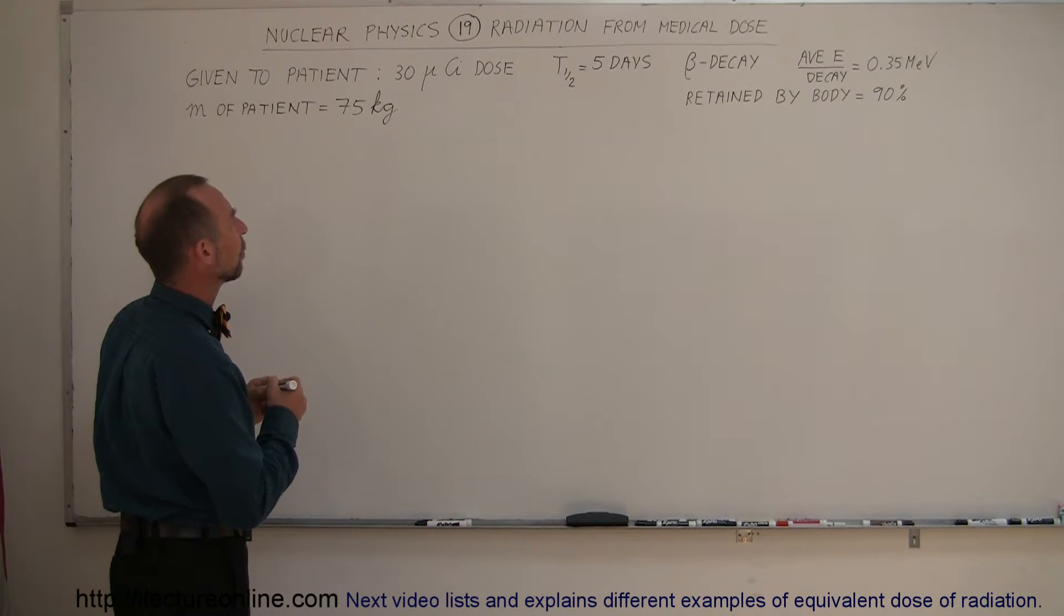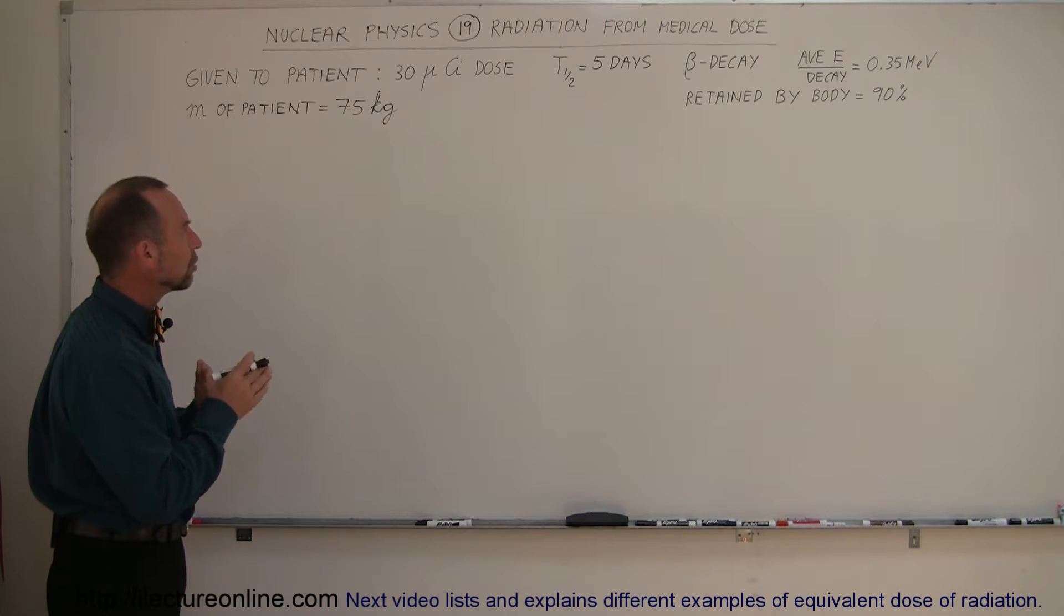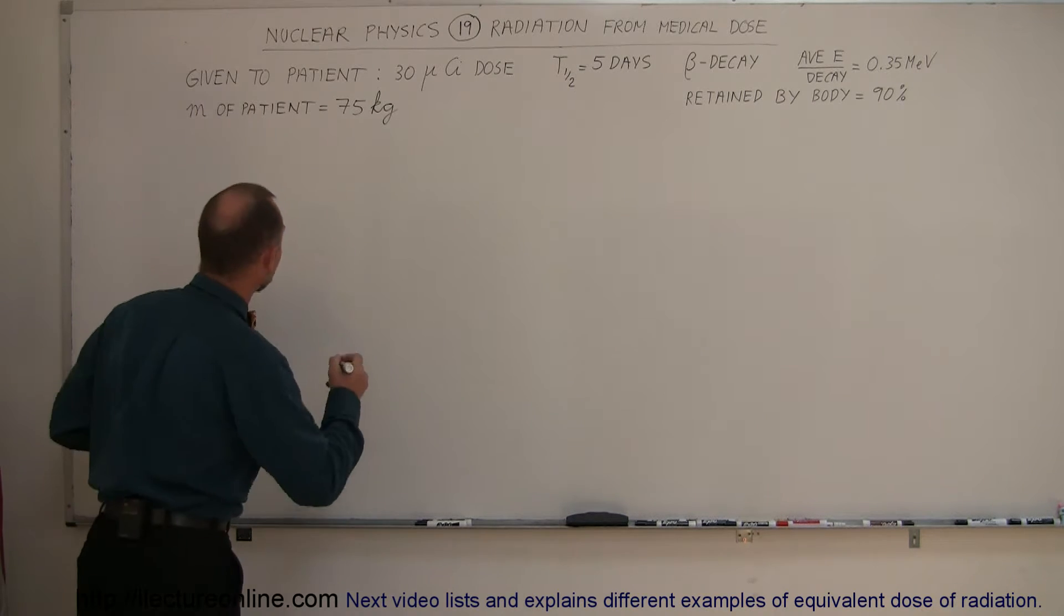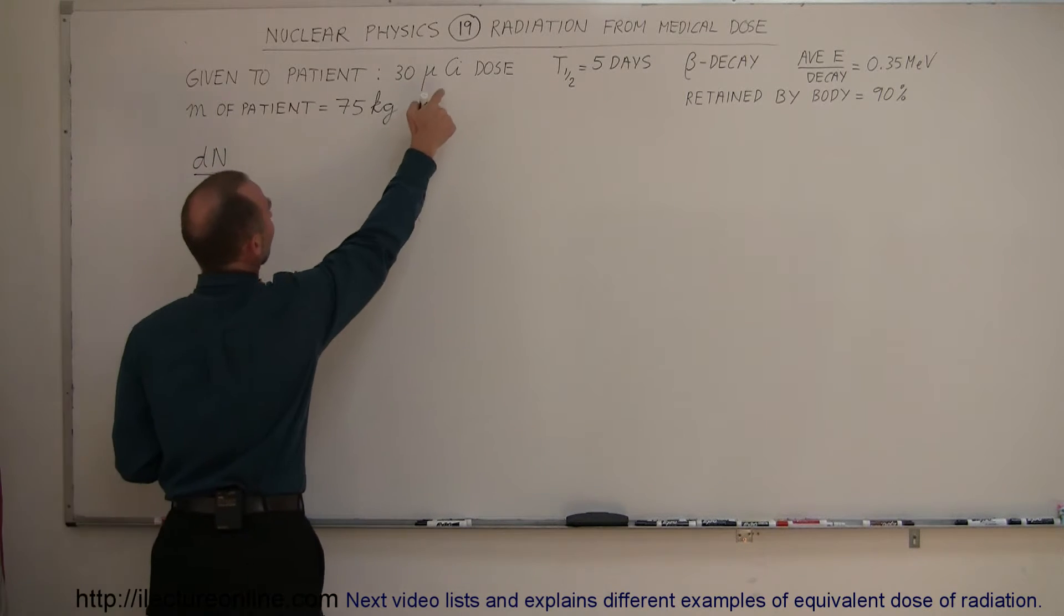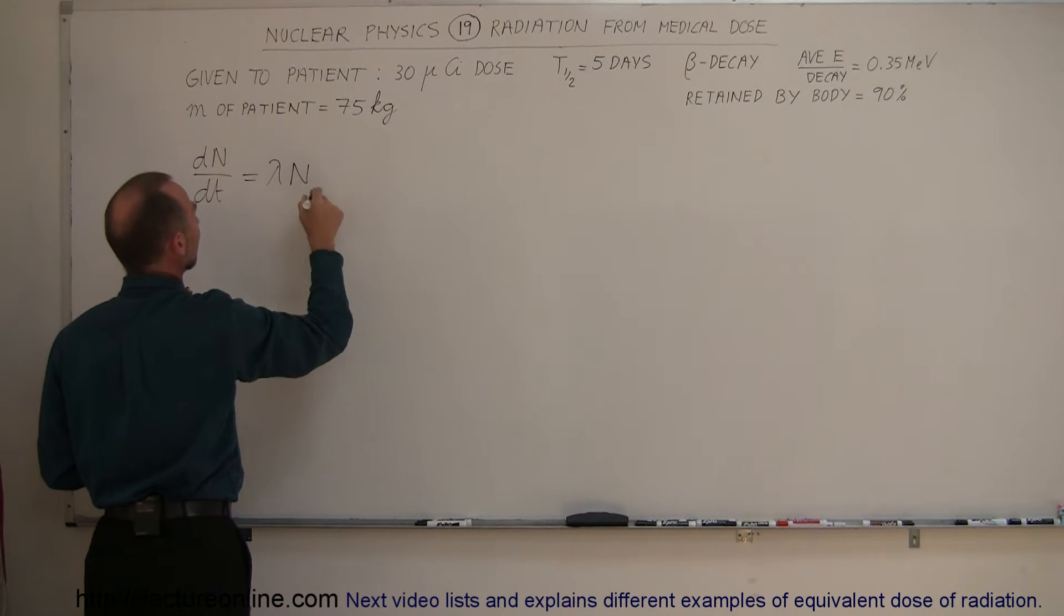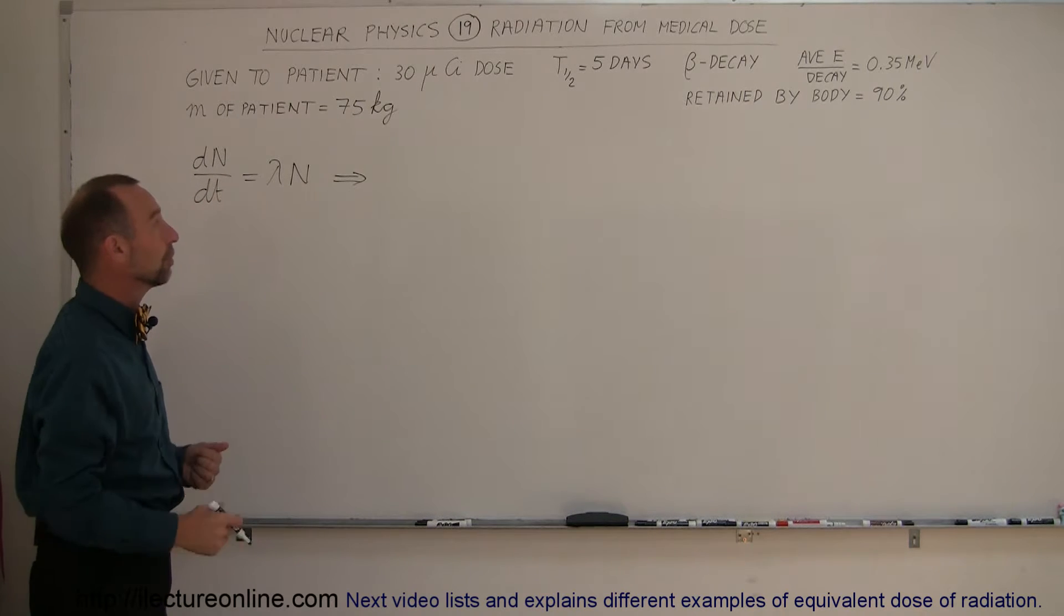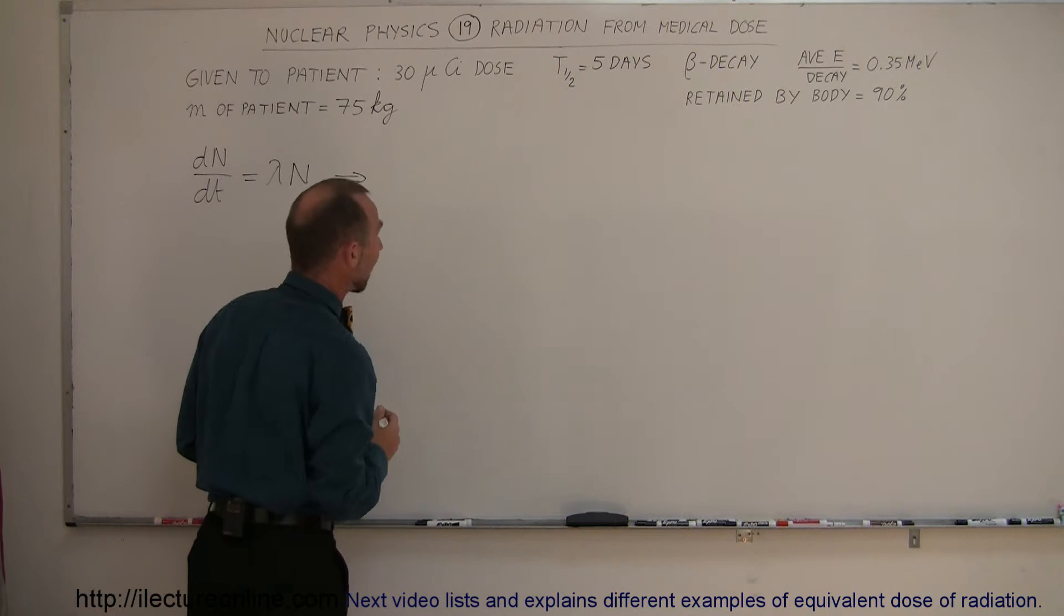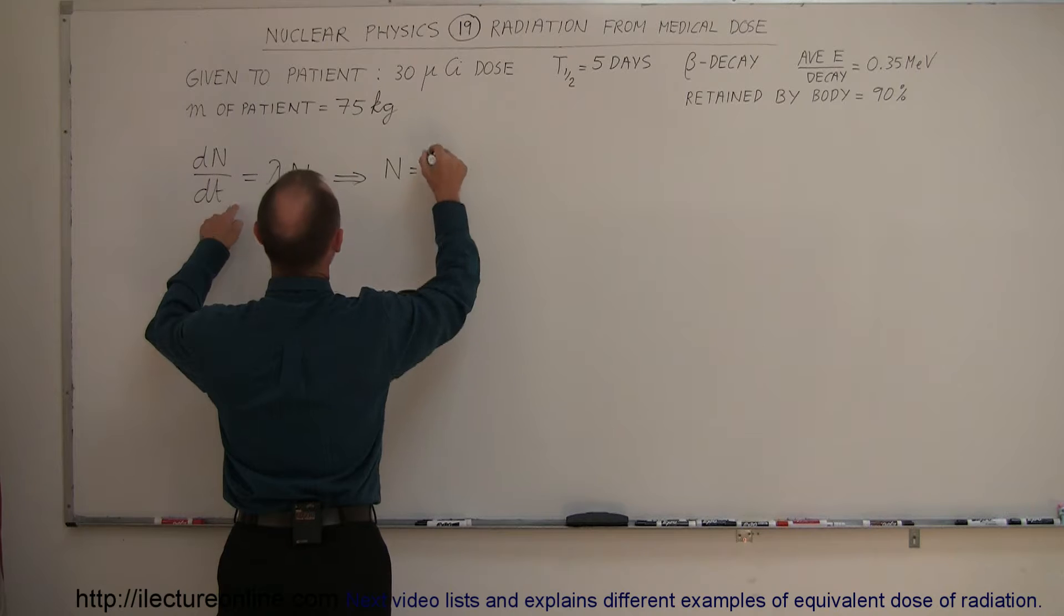So let's see where we start. Well, first of all we need to know what the total number of radioactive particles are in your particular sample. The way we can figure that out is by using the equation that the decay rate dN/dt, which is given, is equal to lambda times N. Which means that if I want to know what the total number of radioactive particles are that are going to eventually decay in your body, we can say that N is equal to the decay rate dN/dt divided by lambda.